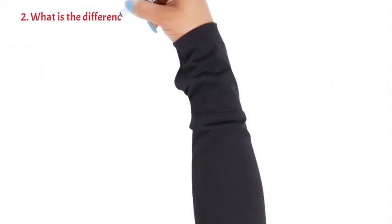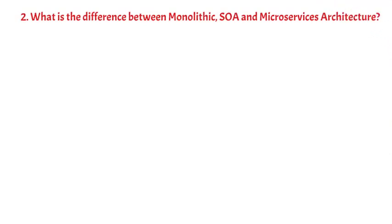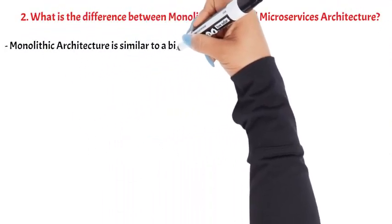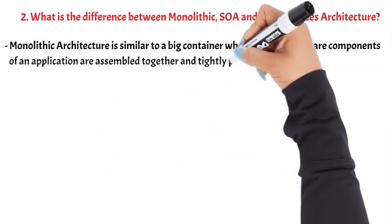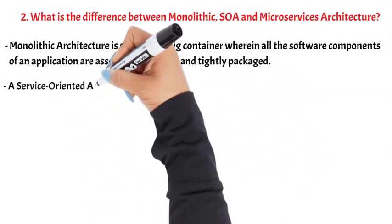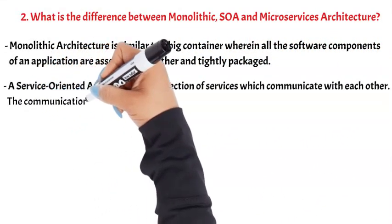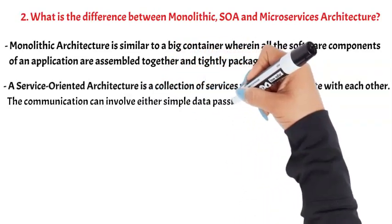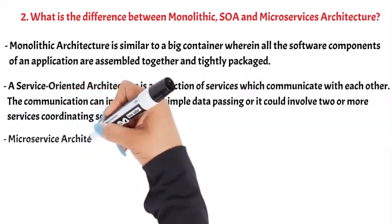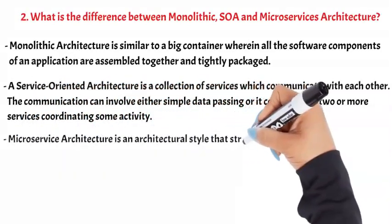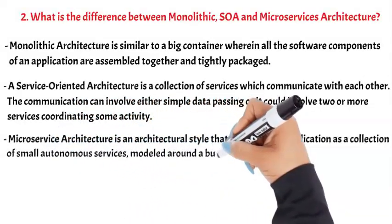Question 2: What is the difference between monolithic, SOA, and microservices architecture? Monolithic architecture is similar to a big container wherein all the software components of an application are assembled together and tightly packaged. A service-oriented architecture is a collection of services which communicate with each other. The communication can involve either simple data parsing, or it could involve two or more services coordinating some activity. Microservice architecture is an architectural style that structures an application as a collection of small autonomous services, modeled around a business domain.